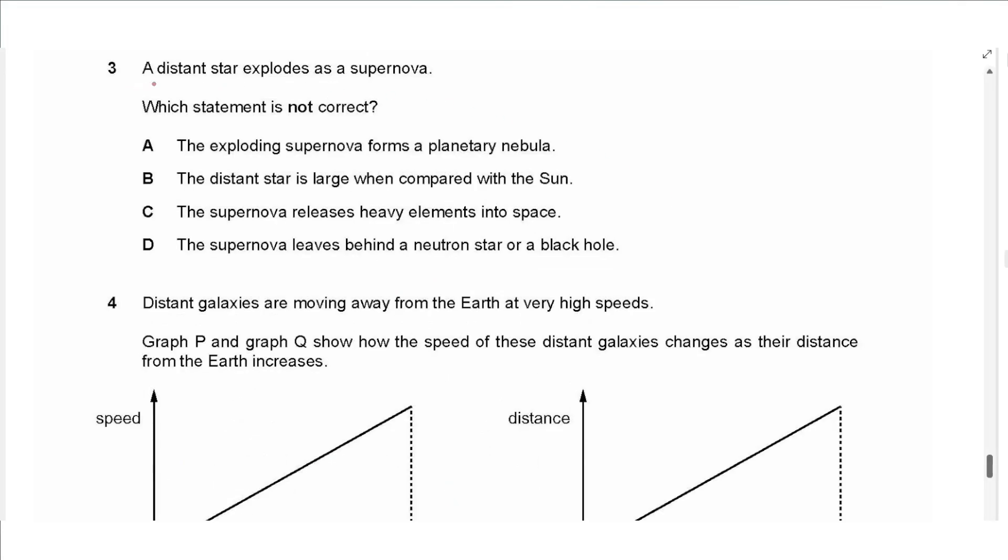The next question says, a distant star explodes as a supernova. Which statement is not correct? The exploding supernova forms a planetary nebula. The distant star is large when compared with the sun. The supernova releases heavy elements into space. The supernova leaves behind a neutron star or a black hole. Actually, the last one is correct. This one is also correct. A distant star is large when compared with the sun. Yes, because it causes a supernova. Supernova happens when the mass is much greater than the sun.